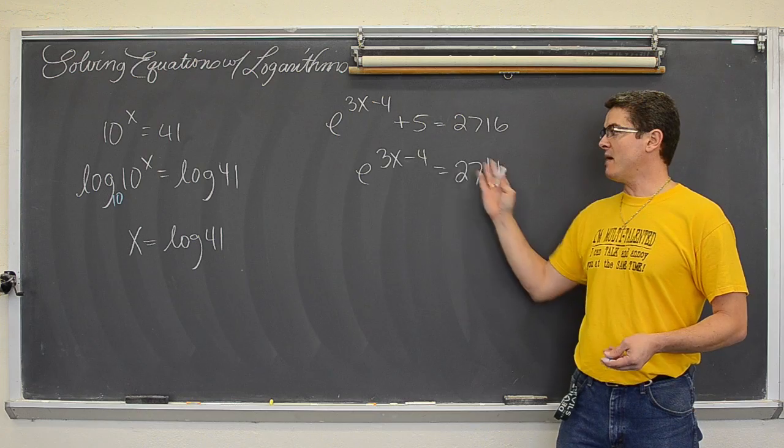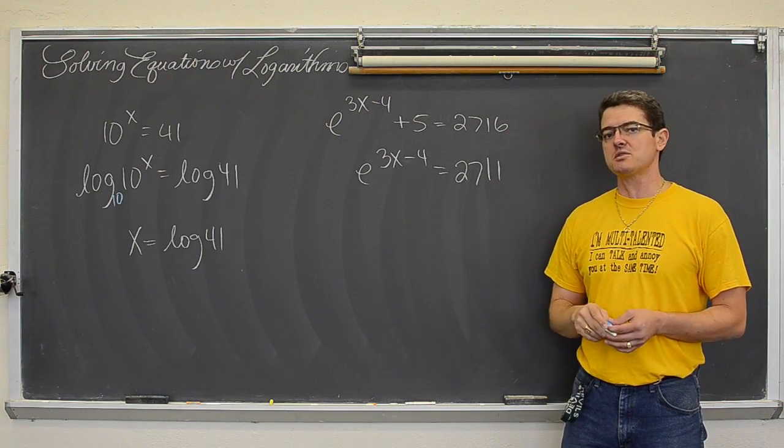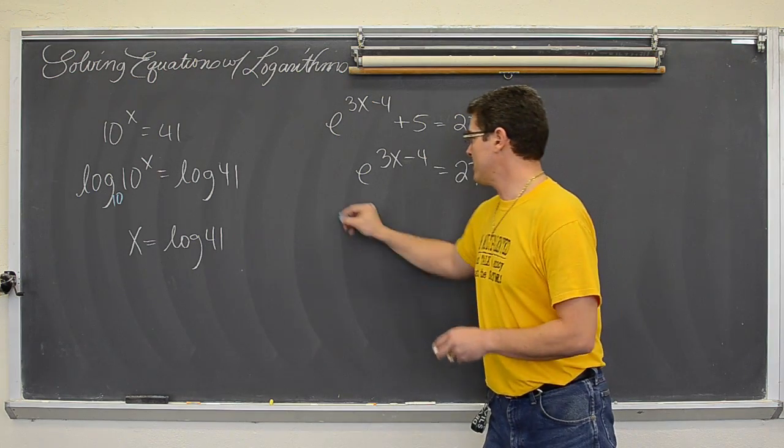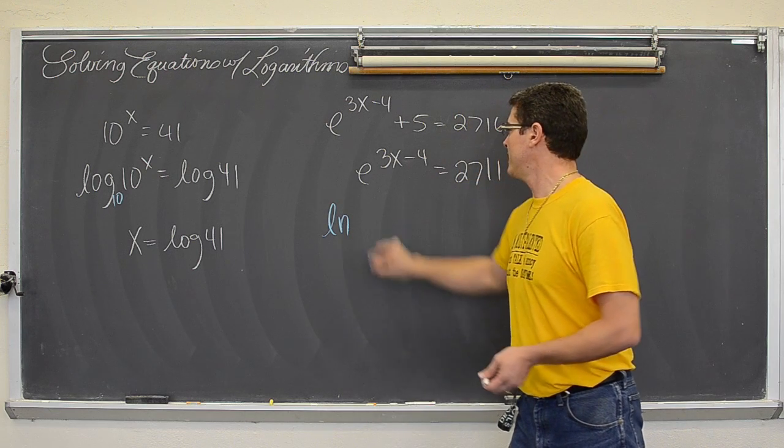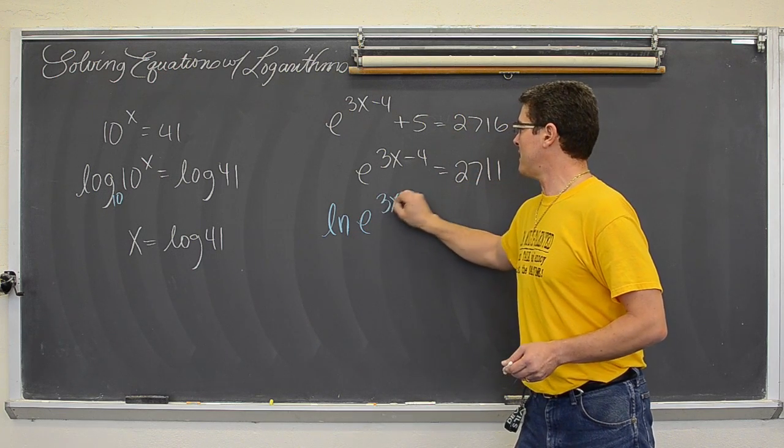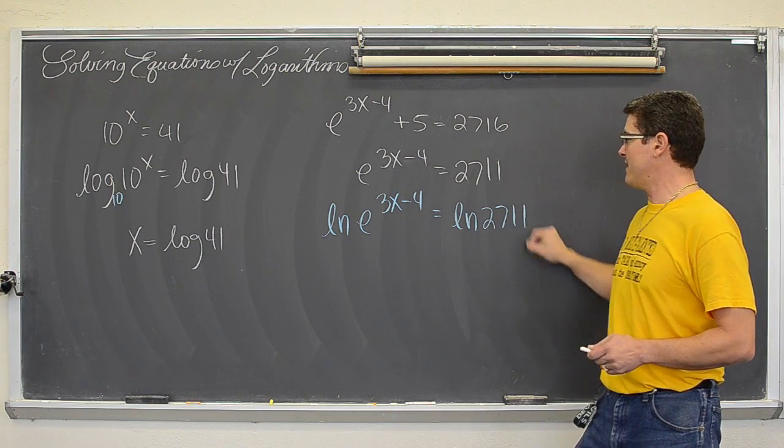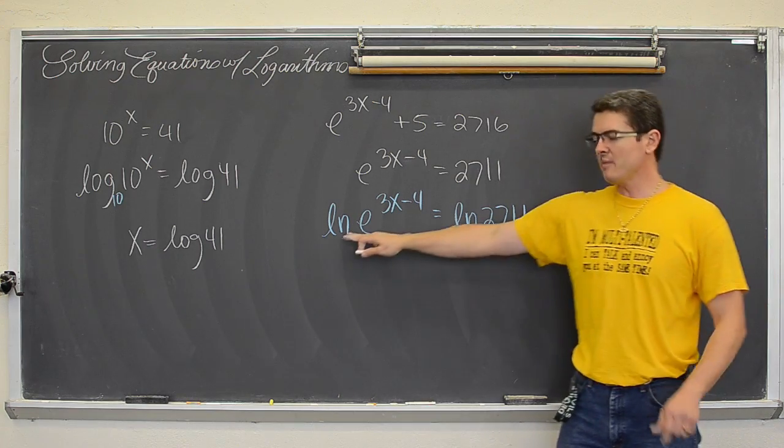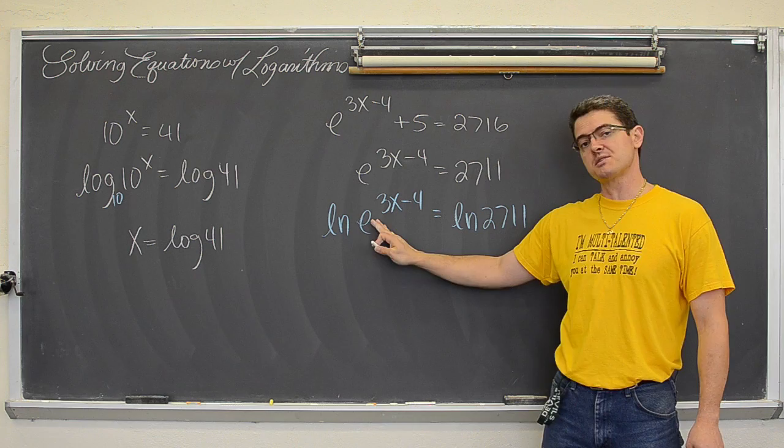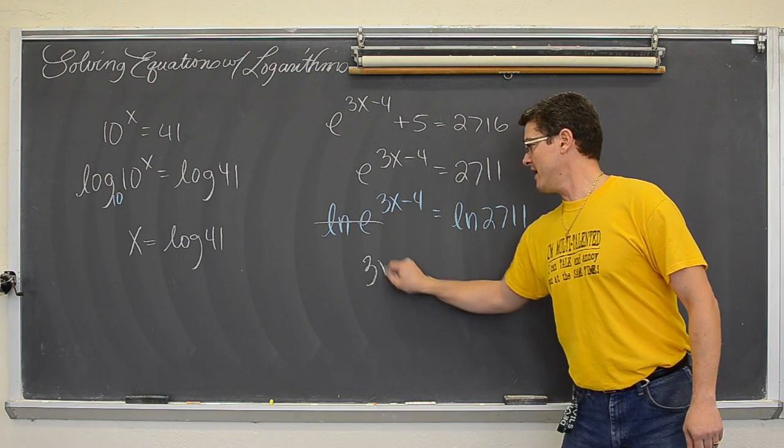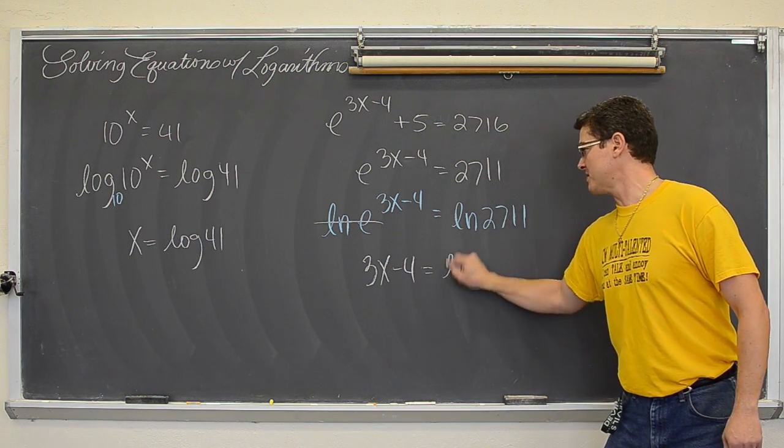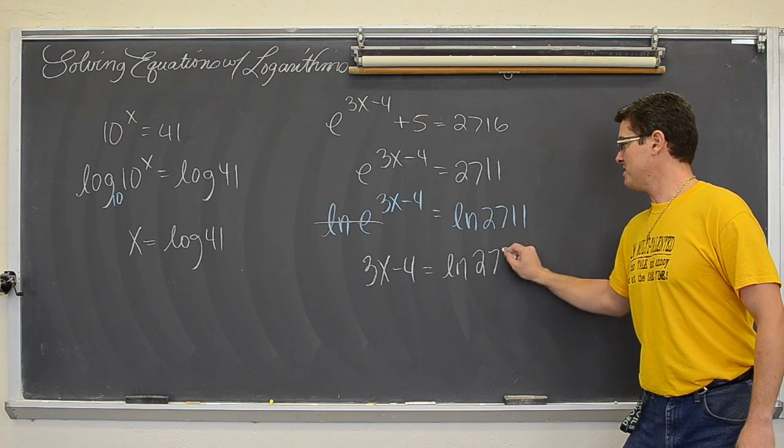We have a base of e. So I could use common log but I am going to use natural log to save a step. And I am going to do the natural log of e to the 3x minus 4 equals the natural log of 2711. And the log base e and the base e here are going to cancel out giving us 3x minus 4 equals the natural log of 2711.